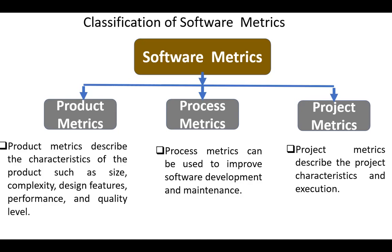Some metrics belong to multiple categories. In addition to these categories, additional types of metrics can be used. An example is the requirements metrics: size of requirements, correctness, validity, and others. For today, that's all. Thank you.